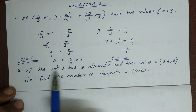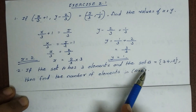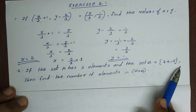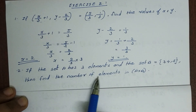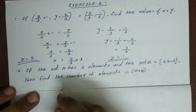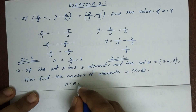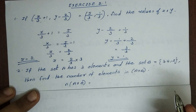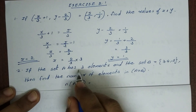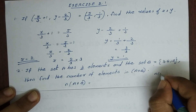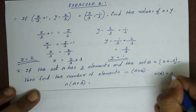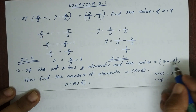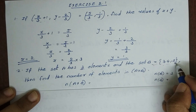Second problem: if the set A has 3 elements and the set B = {3, 4, 5}, find the number of elements in A×B. A has 3 elements and B also has 3 elements.